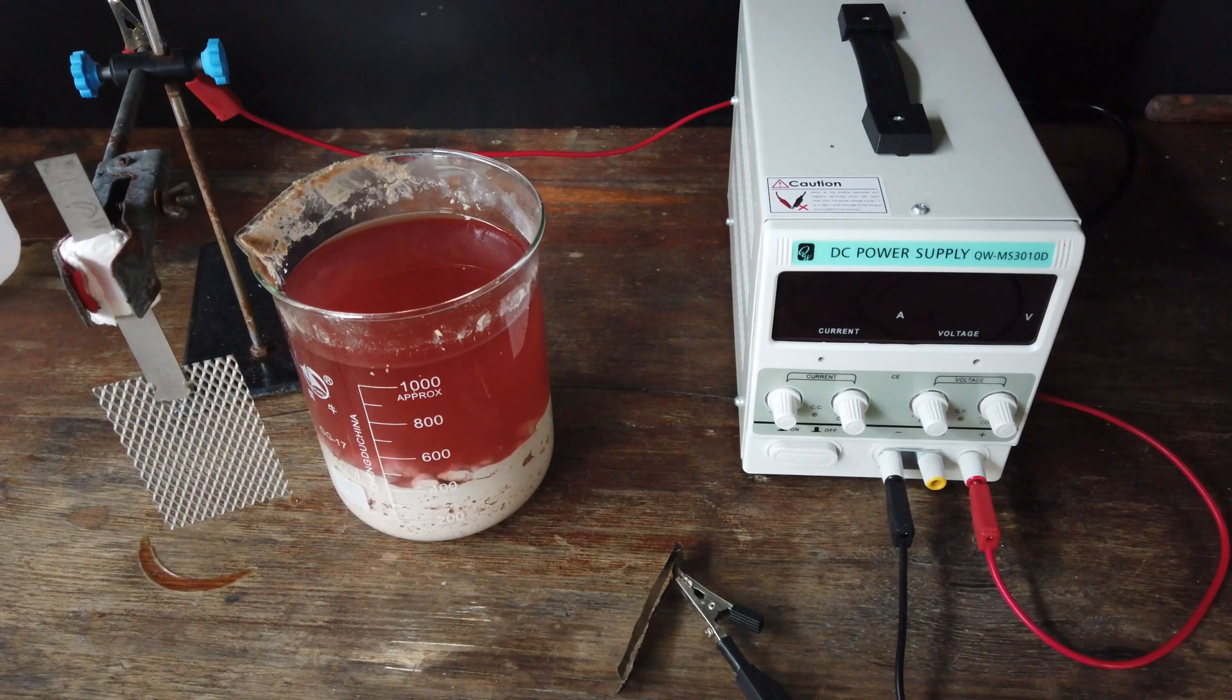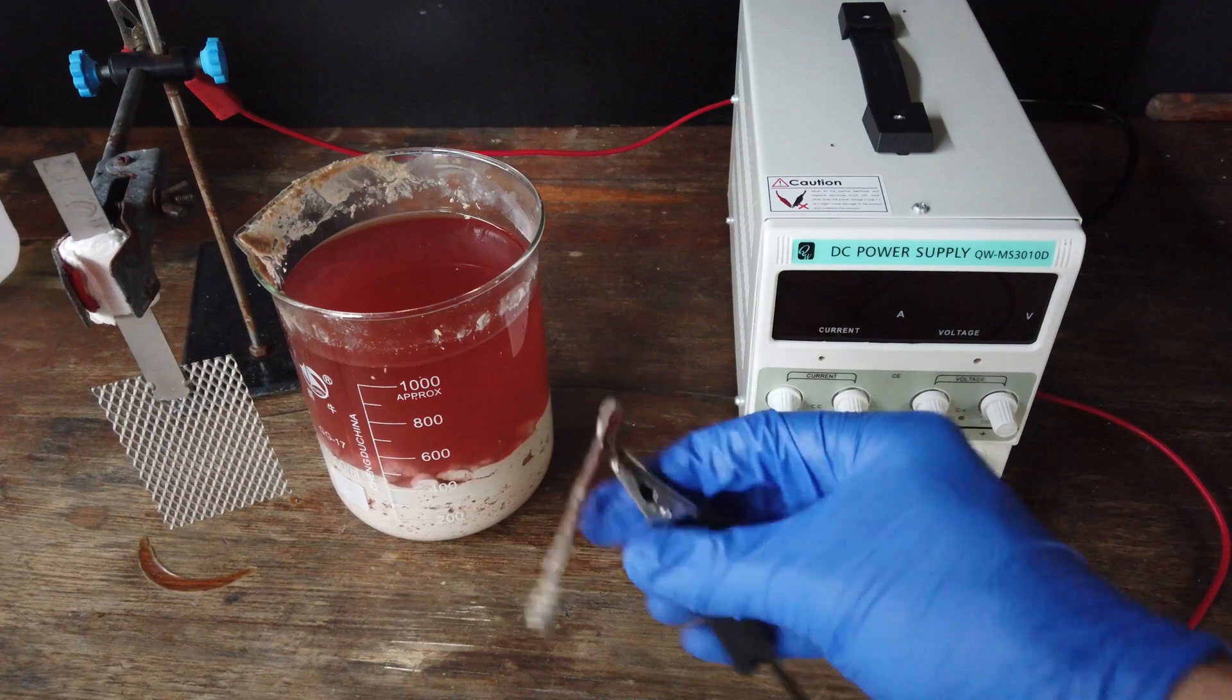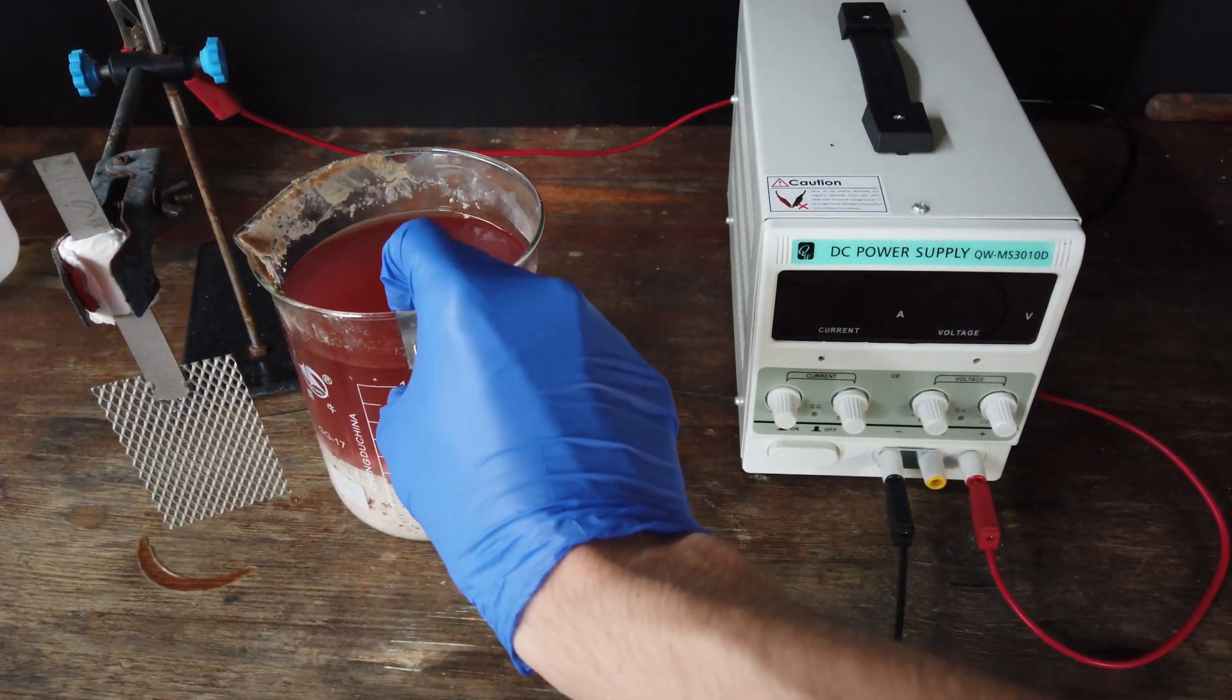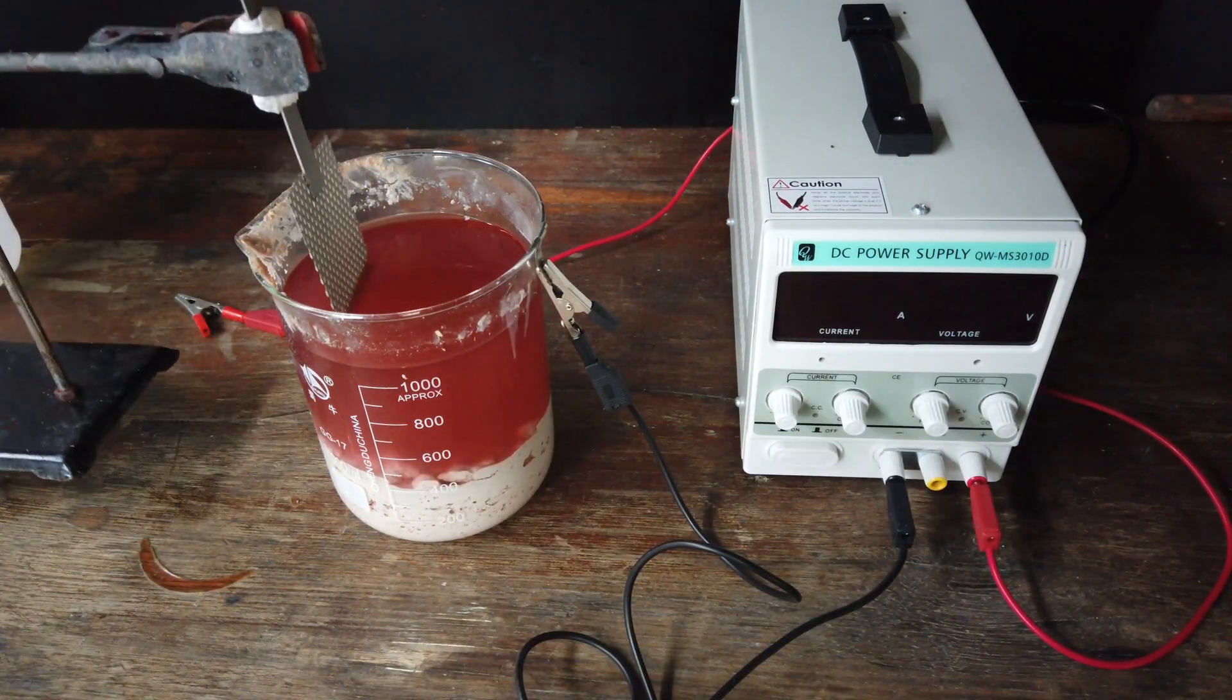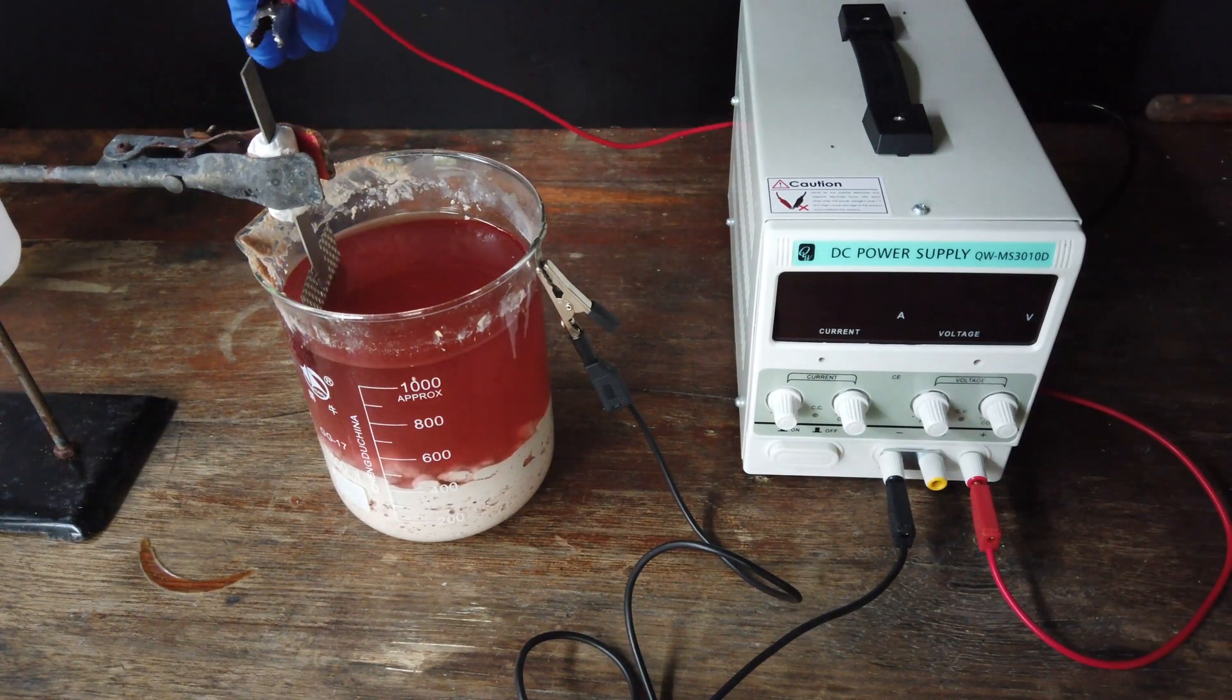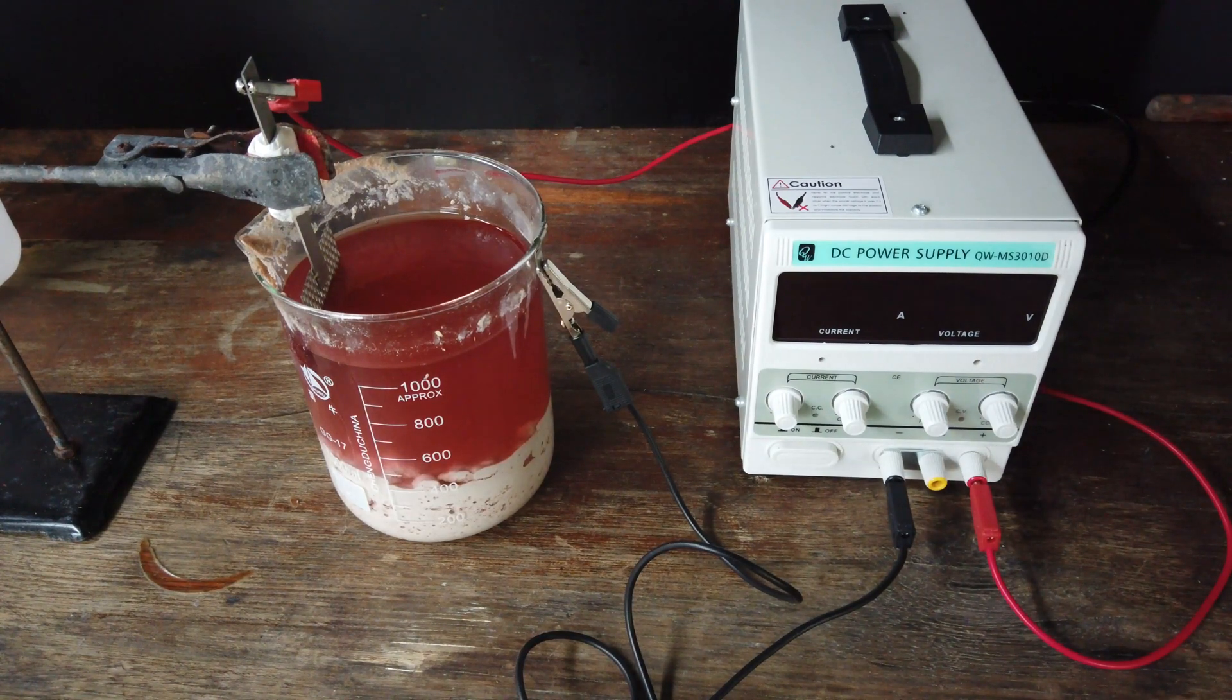Anyway, to electrolyse our nickel and cobalt out of solution, I have some nickel strips as the cathode. They'll sit in the solution just like that. And our platinum anode will be inserted into the solution like this. Connecting everything up. And we should be good to go.